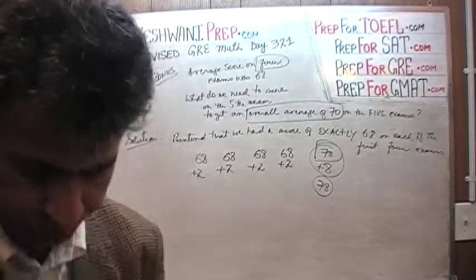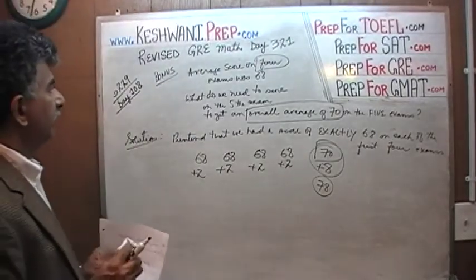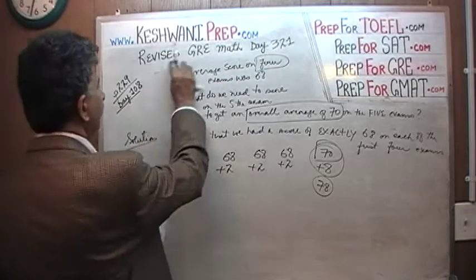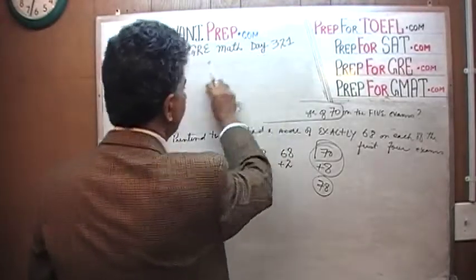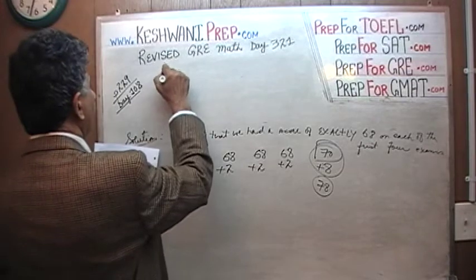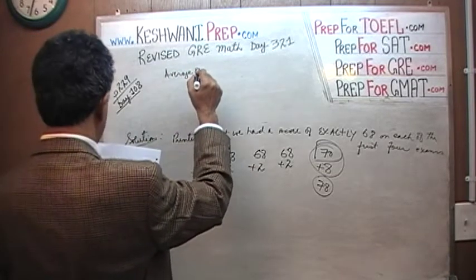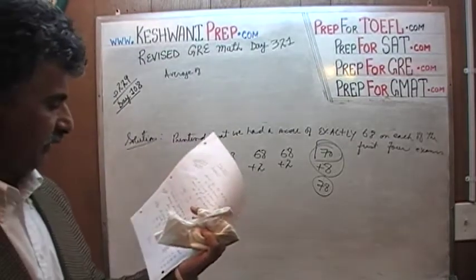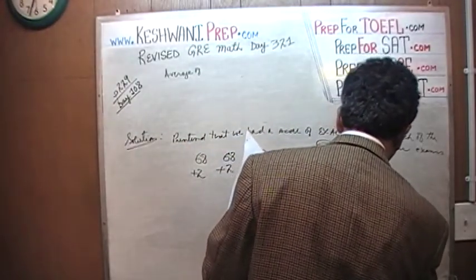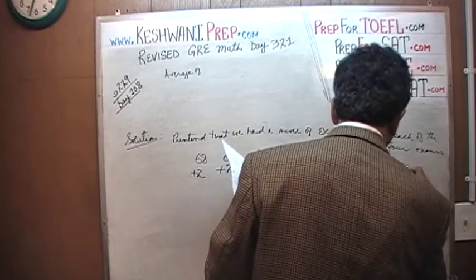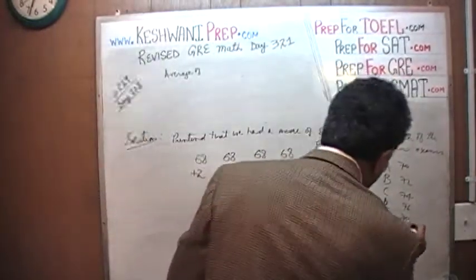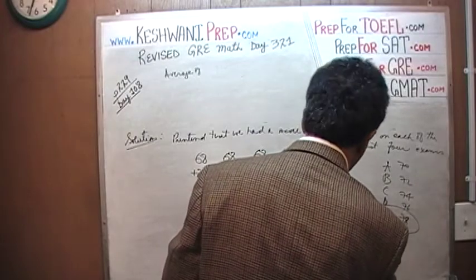Let's do one more. I forgot to give you the answer choices last time. The answer choices were A, B, C, D, E: 70, 72, 74, 76, and 78. And of course the answer is E — 78.